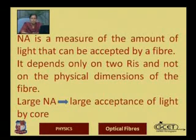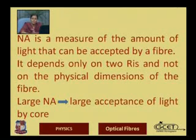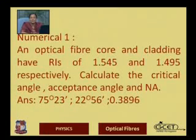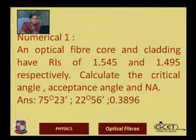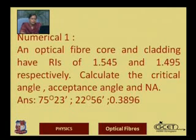NA is a measure of the amount of light that can be accepted by a fiber. It depends only on the two refractive indices and not on the physical dimensions of the fiber. The larger the NA, the larger the acceptance of light by the core. The acceptance cone of a fiber spans twice the acceptance angle. We can now do a mathematical example: an optical fiber core and cladding have refractive indices of 1.545...